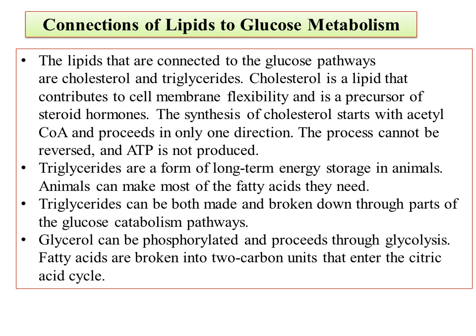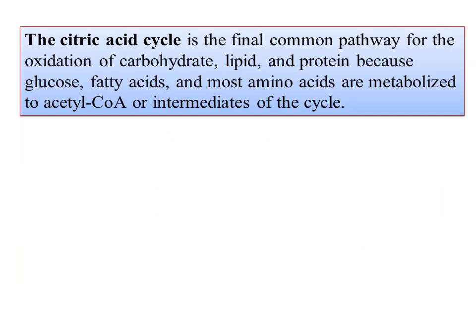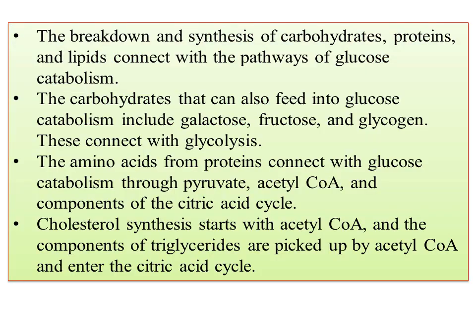The fatty acids are broken into two-carbon units that enter the citric acid cycle. The Krebs cycle is the final common pathway for the oxidation of carbohydrates, lipids and proteins. Glucose, fatty acids and most amino acids are metabolized to acetyl coenzyme A as intermediates of the cycle. The three metabolisms act as precursors for the citric acid cycle. The breakdown and synthesis of carbohydrates, proteins and lipids all connect with the pathways of glucose catabolism.